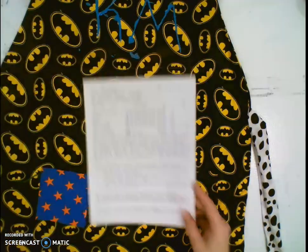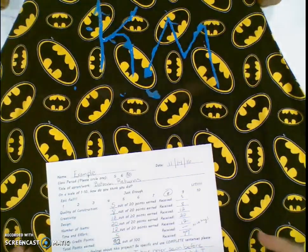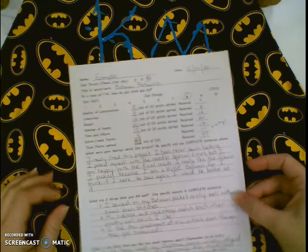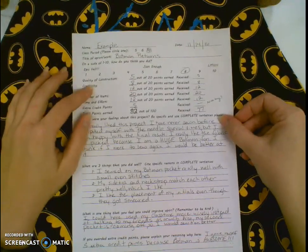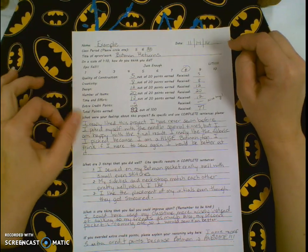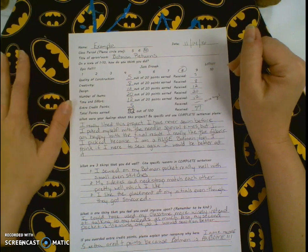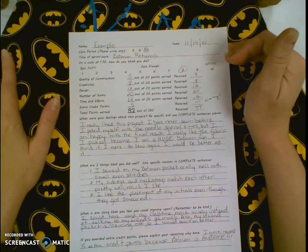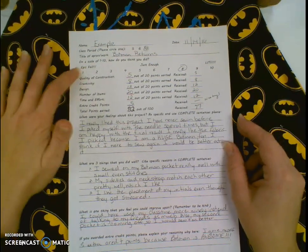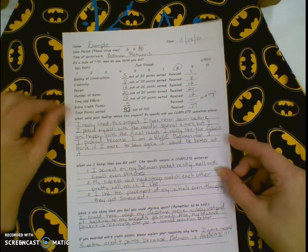Now let's talk specifically about your grading sheet that you have in front of you. Make sure you put your name at the top. I've put example on here just so we know what's going on. Put today's date, and what do you want to call your apron? This one I've entitled Batman Returns because of the fabric. Then rate yourself on a scale of one to ten - how do you think you did between epic failure, I did just enough, or it's lit as you would say.